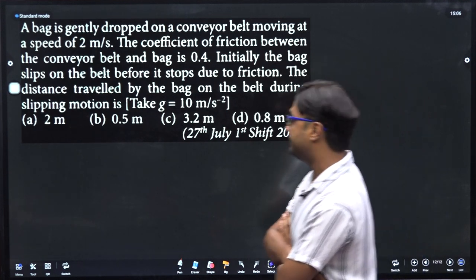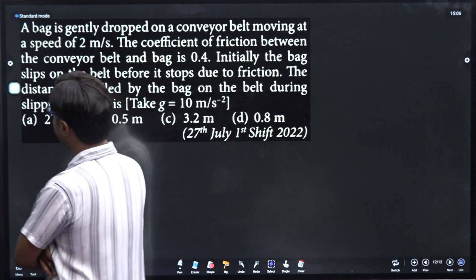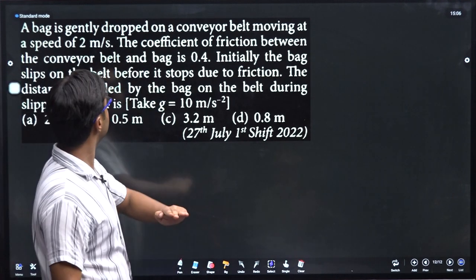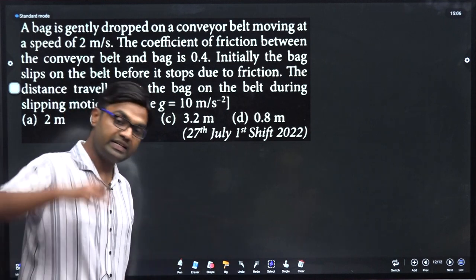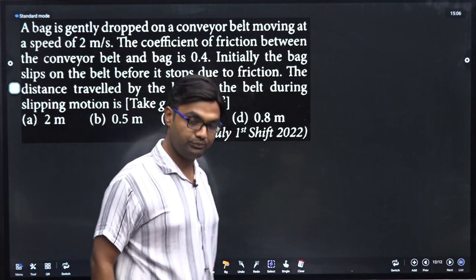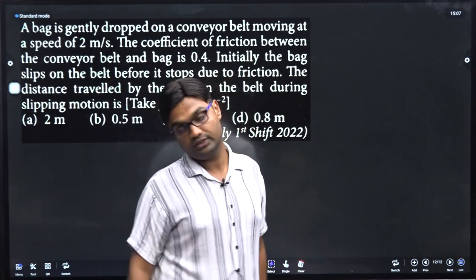Listen up. Here, if you want to say this, the belt is going at a certain speed. You should leave the bag or block. Mu is 0.4. So how much will it slip?